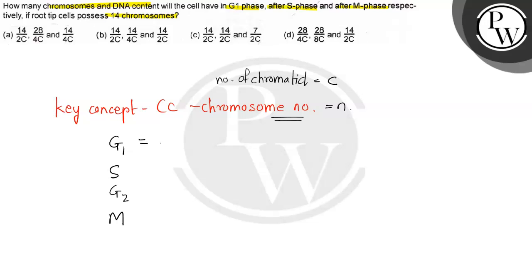So here, which was in the beginning, that is 2N2C, which will remain here. That will be 14 chromosomes. That is N.